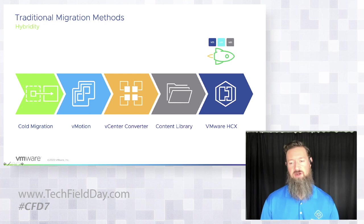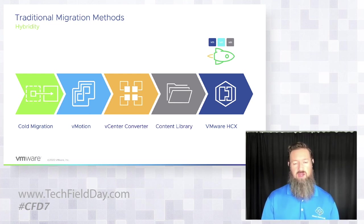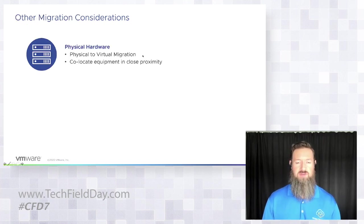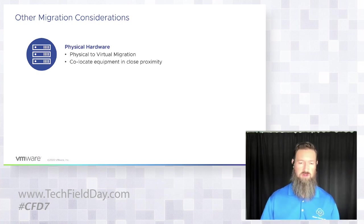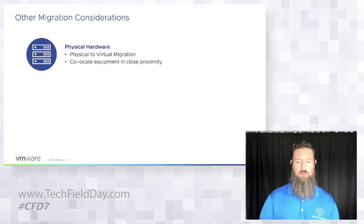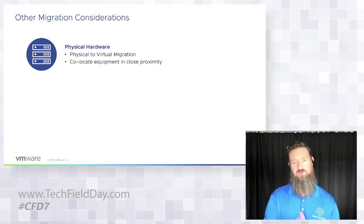Lastly, we'll talk about VMware HCX — the mobility platform for moving workloads to the cloud with a large number of options beyond our traditional methods. Other migration considerations include physical hardware: do we want to do a physical-to-virtual migration? Also, co-locating equipment for close proximity — if you have P-series hardware that can't be virtualized, moving it into a colo space like Equinix or Rackspace puts it in your next hop, right in line with your Direct Connect for high-speed access to cloud applications.